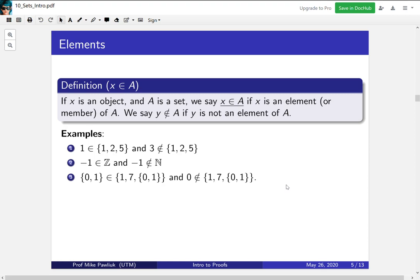The major thing about sets is when things are elements and not elements. So because that shows up so often, we'll define it. If x is an object and A is a set, we say that x is in A if x is an element of or a member of A. And we use this ∉ symbol to mean not an element of or not in. Here are some examples.